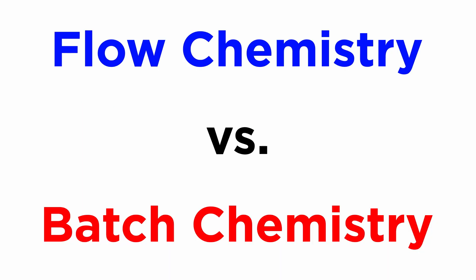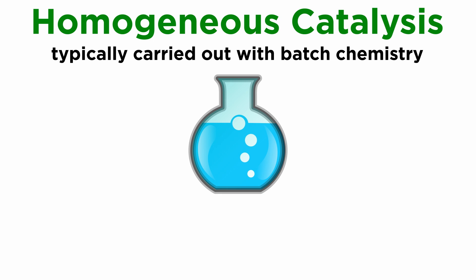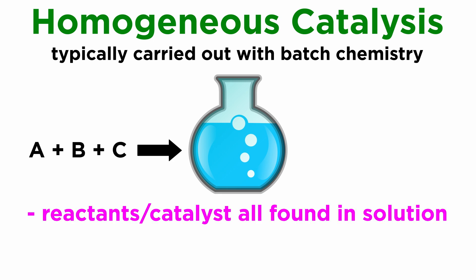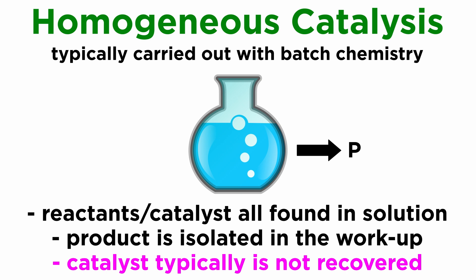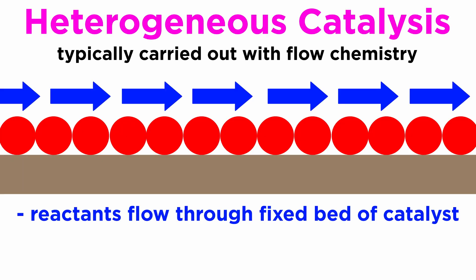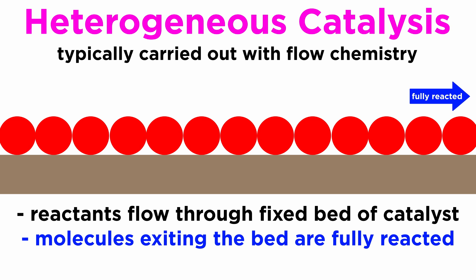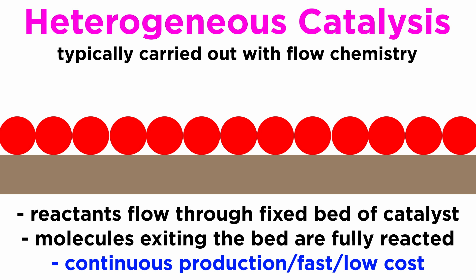The fact that catalysts are in a different phase with respect to the reactants leads to the frequent application of heterogeneous catalysis in flow instead of batch. Homogeneous catalysis is usually carried out in batch, meaning that all reactants and the catalyst are added to the reactor, the conditions are adjusted, and at the end the product is isolated in the workup, whereas the catalyst is lost. In flow chemistry, the reactants are allowed to flow, either by the action of a gas or a solvent, through a fixed bed hosting the catalyst, and this is done at such a rate that molecules exiting the bed are fully reacted. This permits a continuous production of material and is advantageous in terms of speed and cost.